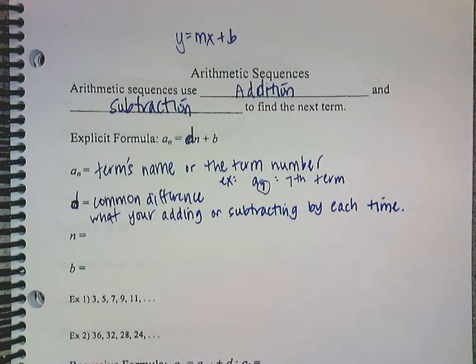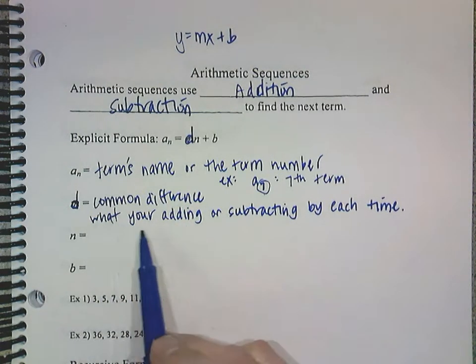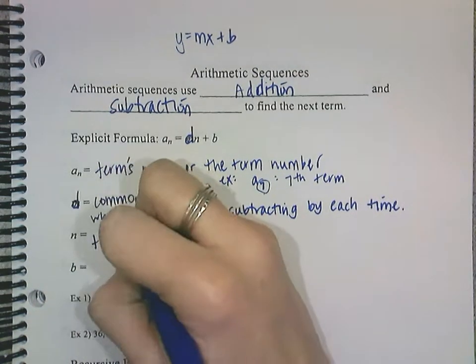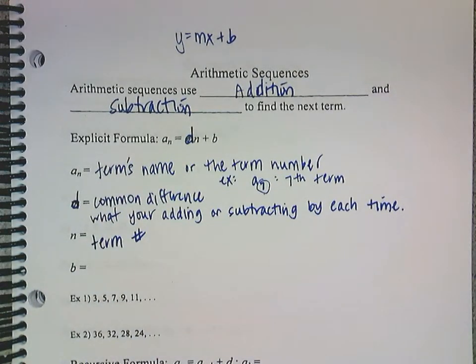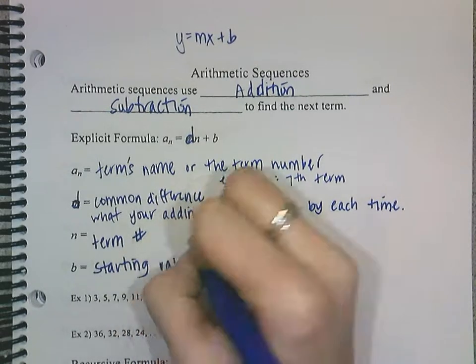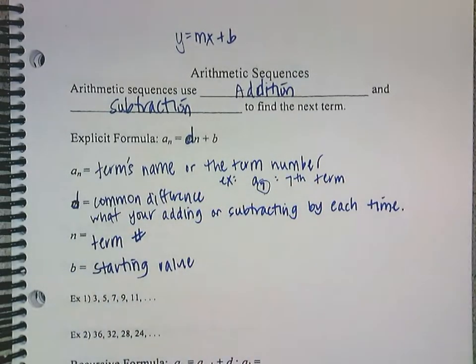Okay, sorry. So the common difference is what you're adding or subtracting by each time. n is the term number. And b is the starting value. It's your, it's the beginning point.